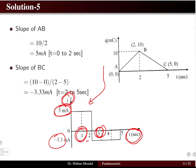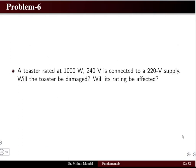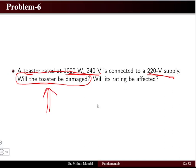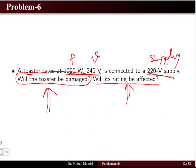This is the solution for problem five. Problem six: a toaster rated 1000 watts and 240 volts is connected to a 220 volt supply. Will the toaster be damaged, and what is its actual power consumption? We determine the resistance from the ratings and compare the actual current to the maximum safe current.